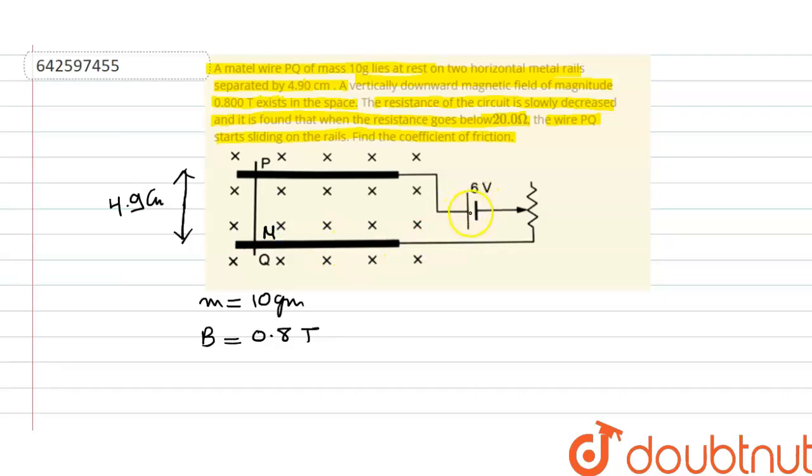So what happens is that this circuit is closed. So there will be current flowing in this direction. So current will flow in this direction in the wire PQ.